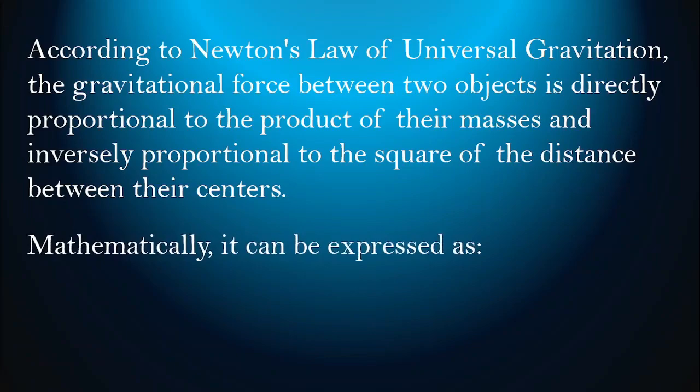Mathematically, it can be expressed as F equals the product of the universal gravitational constant G, mass of object one (M₁), and mass of object two (M₂), all over the distance of separation between them (r) squared.